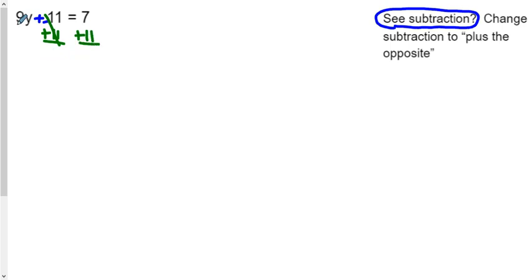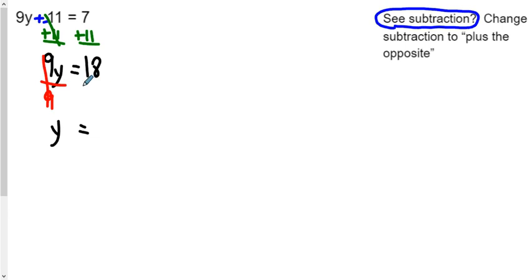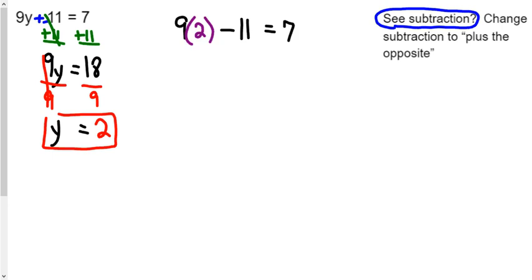That's what we've done to the left side — now go to the right side and do the same thing. The 9y comes down and we get 18. Now we do the exact same thing as before: the nine is multiplying the y, so divide by nine — that cancels it and y is free. What we did to the left side we now do to the right side: divide by nine. Eighteen divided by nine is two — that is our answer. Checking: nine times two is eighteen, and eighteen plus negative eleven is indeed seven, so we have the right answer.